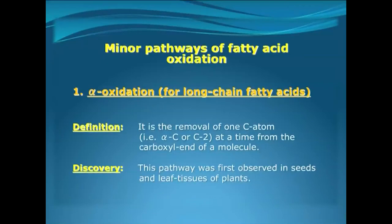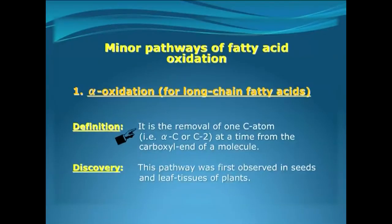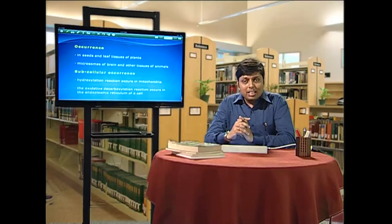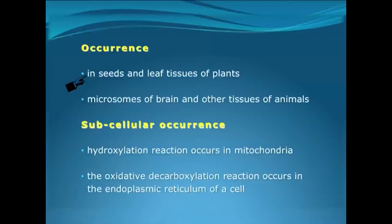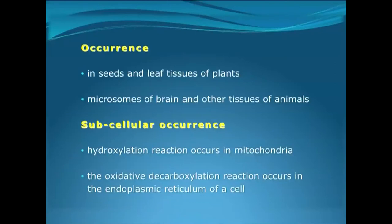Coming to some minor pathways of fatty acid oxidation. The first is the alpha oxidation pathway, applicable only for the long-chain fatty acids. Alpha oxidation means the removal of one carbon unit from the alpha carbon atom of the fatty acids. This was first discovered in the seeds and leaf tissues of plants. It also takes place in the microsomes of brain and other tissues of animals. Subcellularly, alpha oxidation is completed in two steps: the first is hydroxylation that takes place in the mitochondria, and the second is oxidative decarboxylation that takes place in the endoplasmic reticulum.